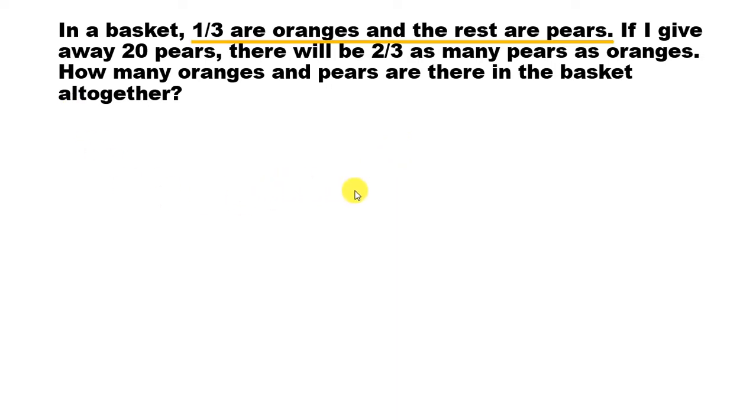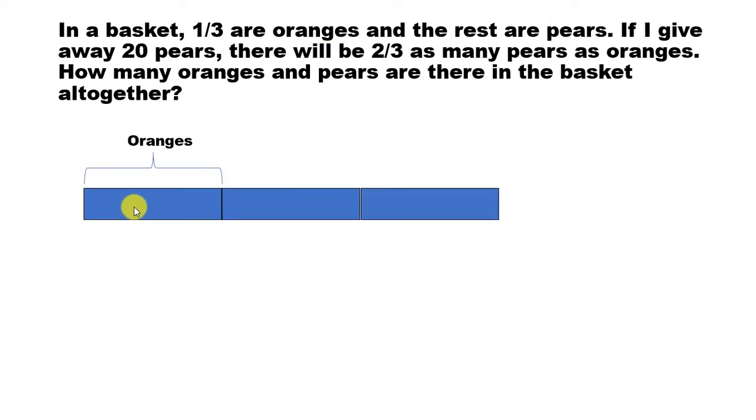So the first to look for is the first condition: one-third are oranges and the rest are pears. What does it mean? If we divide the fruits, oranges and pears, into 3 units, 1 unit belongs to orange and pears occupy the other 2 units. So let's say we have 3 units diagram here. So 3 boxes are here and the first box is oranges, 1 box, and pears are the other two boxes here.